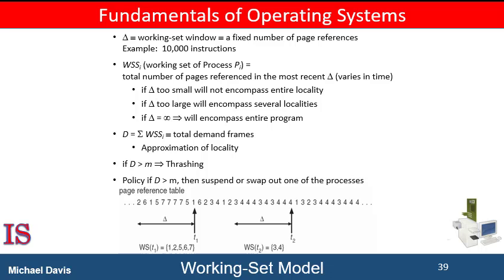If a page is in active use, it will be in the working set. If it's no longer being used, it will drop from the working set delta time units after its last reference — in other words, after the system has passed through all of the other units of the set. Therefore, the working set is an approximation of the program's locality. For example, given the sequence of memory references shown here, if delta equals 10 memory references, then the working set at time t1 is 1, 2, 5, 6, and 7. By time t2, the working set has changed to 3 and 4.